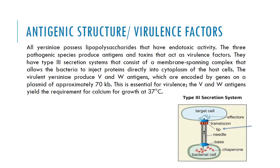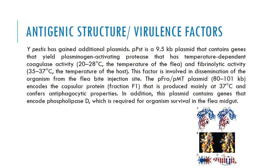The virulent Yersinia produce V and W antigens which are encoded by genes on a plasmid of approximately 70 kilobase pairs. This is essential for virulence of these bacteria. The V and W antigens yield the requirement for calcium for growth at 37 degrees centigrade. Yersinia pestis has gained additional plasmids, which also help the bacteria inject proteins inside the cytoplasm of the host cell.